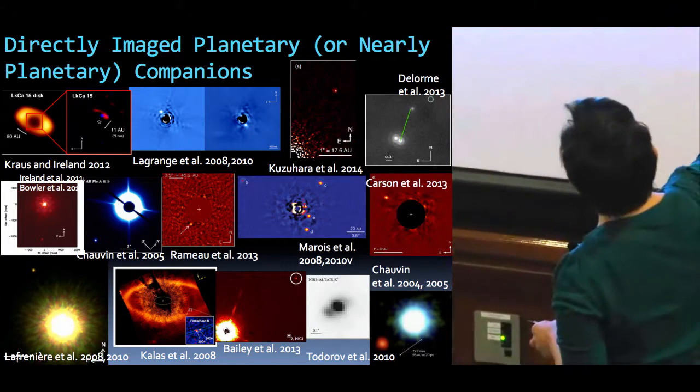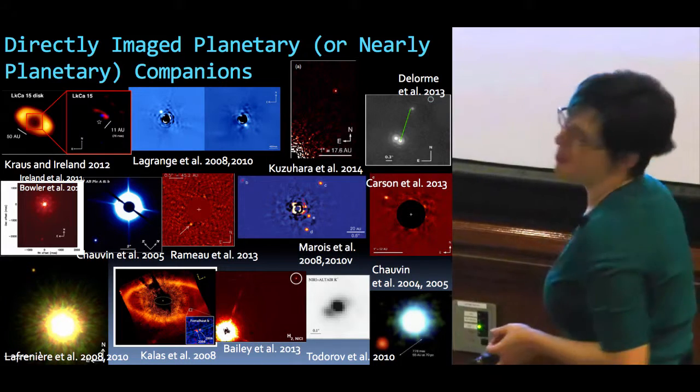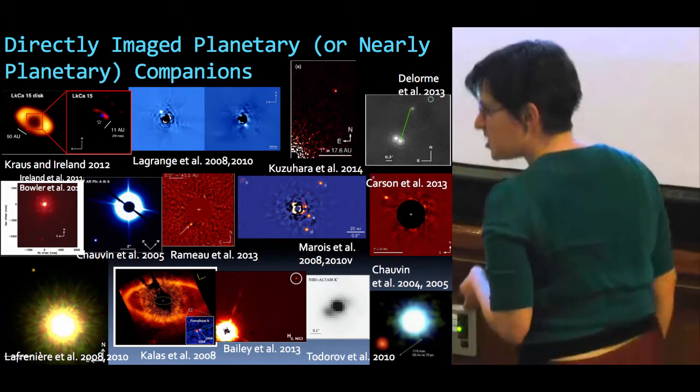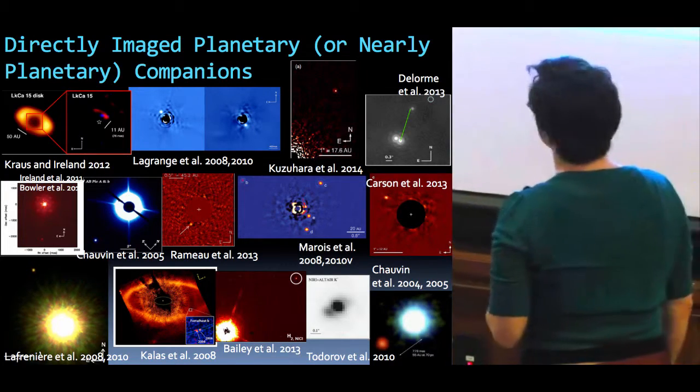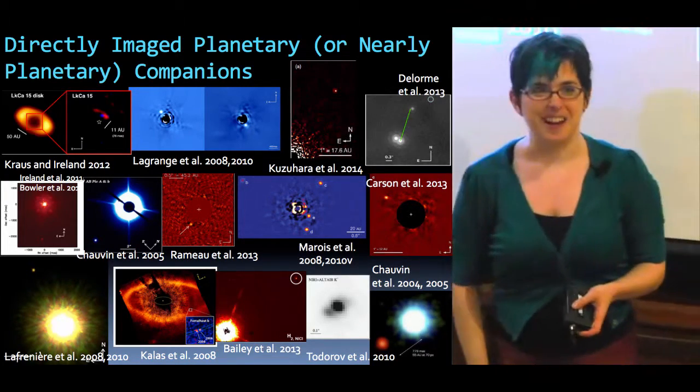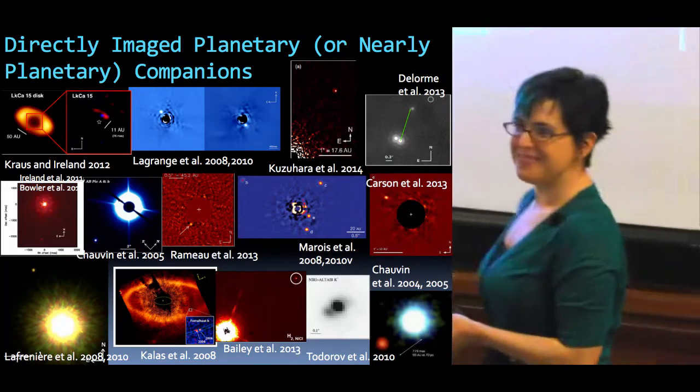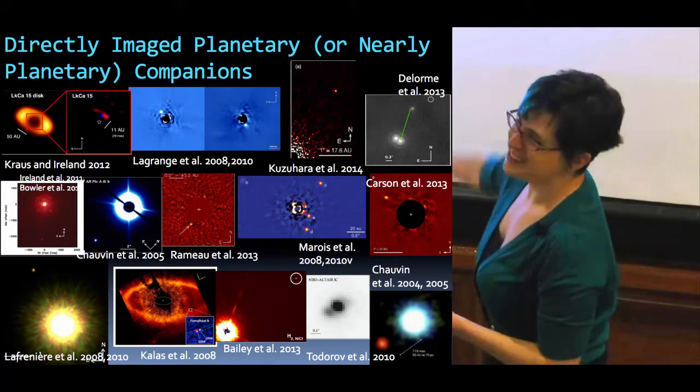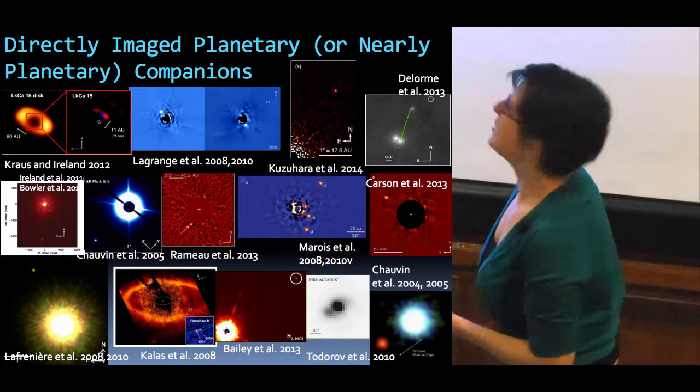And I say, or nearly planets, because there's some arguments about some of these. These are all infrared images of young planets. There's only one of these images that isn't infrared. Anyone know which one it is? Fumalhat. Yes, this is optical. It's also very controversial.